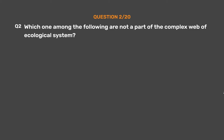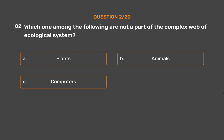Question number 2. Which one among the following is not a part of the complex web of the ecological system? Option A: Plants. Option B: Animals. Option C: Computers. Option D: Humans.